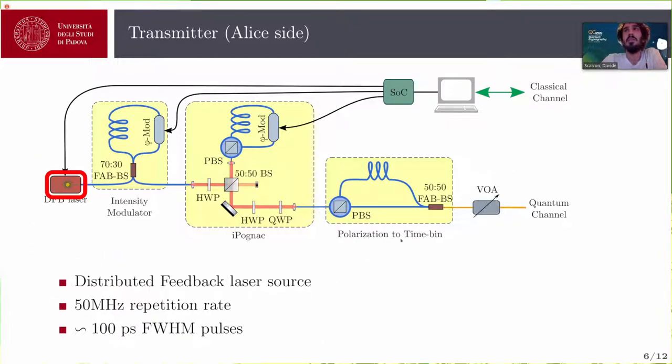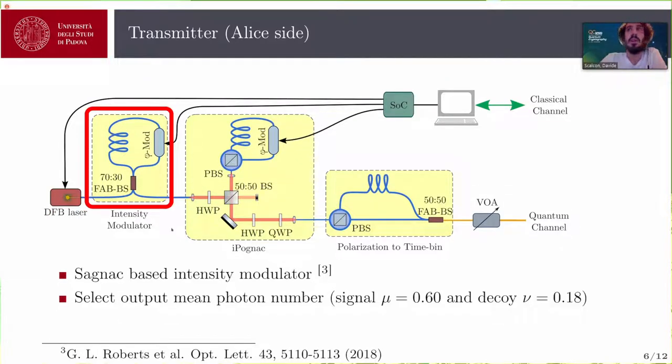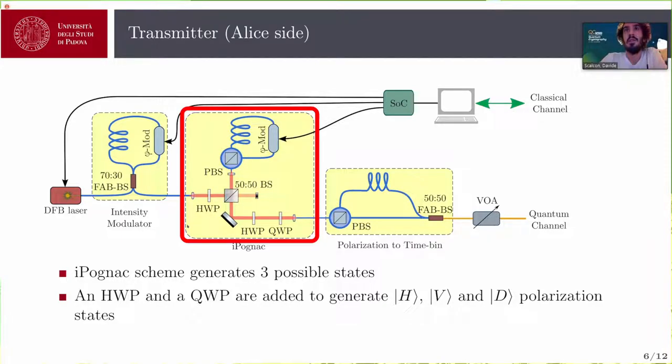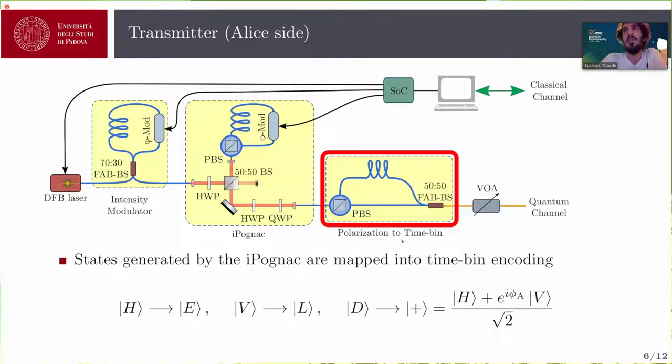And we wanted to exploit this conversion in our setup. So let me start to talk about the system. The source is a DFB laser, which amplitude is modulated by an intensity modulator based on a sonic loop, to implement the two decoy states. Then the light is modulated into its polarization states with the iPodnet, with a slight modification that we add a half-wave plate and a quarter-wave plate to map the left and right circular polarization states into the horizontal and vertical polarization states. This way, we could use the iPodnet to generate the two-dimensional time-bin states using this conversion stage.